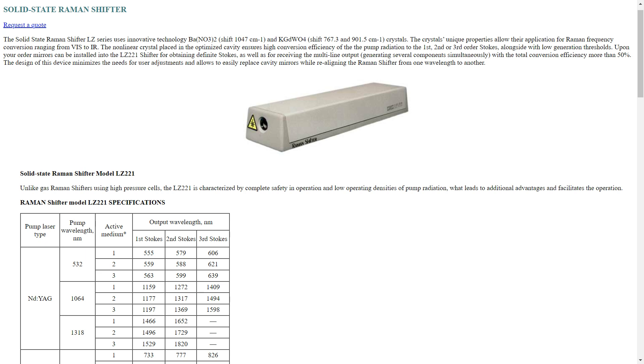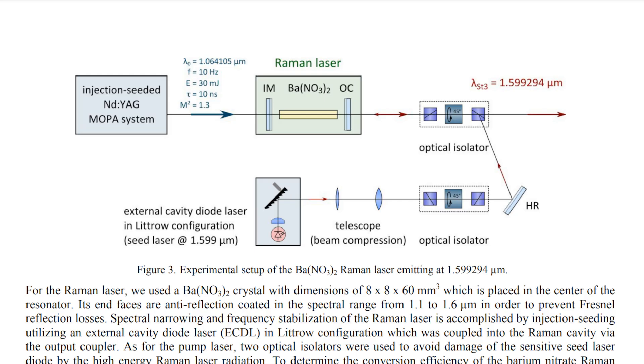Raman materials, lasers or shifters are available commercially with a wide range of wavelengths advertised. These generally contain crystals of barium nitrate or potassium gadolinium tungstate as the Raman gain medium. However, the crystals of these must be grown really quite large, about 60-80mm in length and are very expensive.